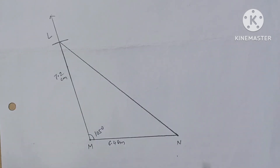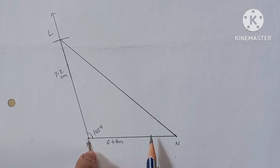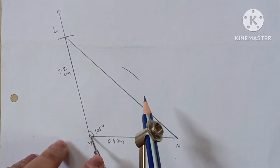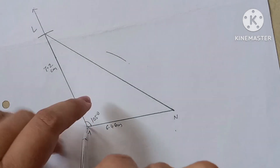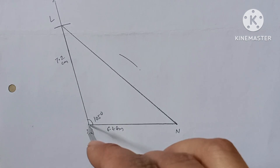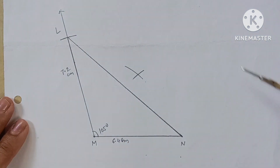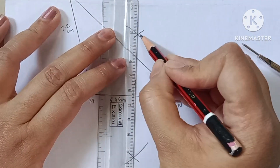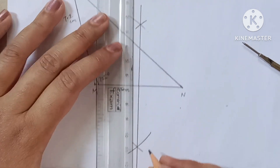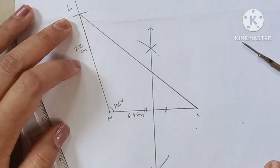First, bisect the side MN. Take more than half distance in your compass. Keep your compass point on M and make arcs upside and downside. Now keep your compass point on N and make arcs. Join the intersection points to get the perpendicular bisector. Now bisect LM.